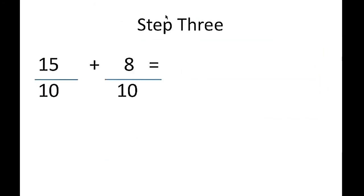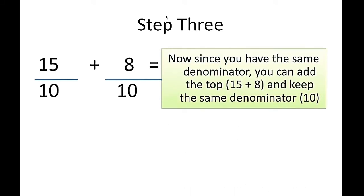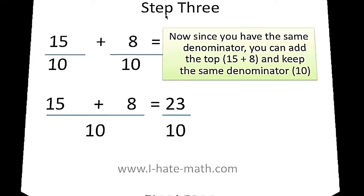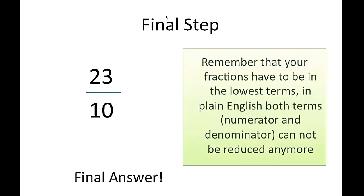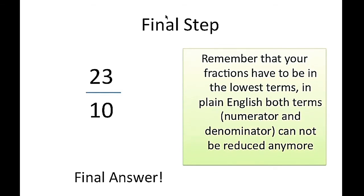Okay, now third step. Denominator same ho gaya, dono 10 10. Now since you have the same denominators, you can add the top. 15 plus 8 kar sector, denominator same rakhe. 15 plus 8 currently to 23 aaya ga. Denominator me 10 aaya ga. 23 by 10 final answer hai. Remember that your fractions have to be in the lowest term. In plain English, both term numerator and denominator cannot be divided by any number.